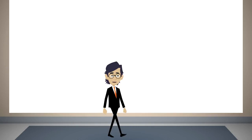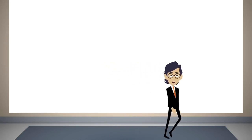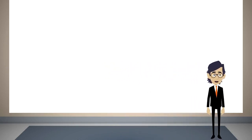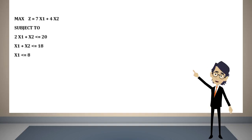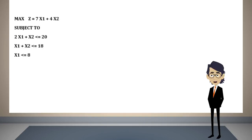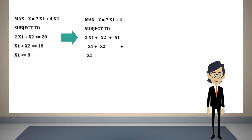Let us start by overviewing some concepts and recalling the steps of the algebraic method. The problem we saw in the previous session is the following. The first step is to transform each inequality into an equality. When the constraint is less than or equal to, we add a slack variable, and when it is greater than or equal to, we subtract a surplus variable. Usually we denote these variables with the letter s.